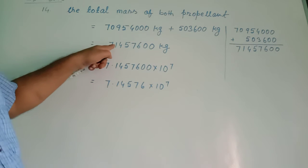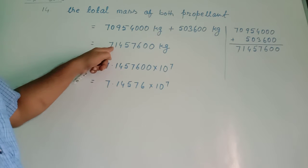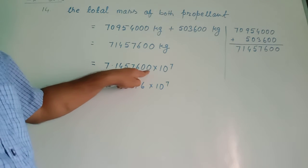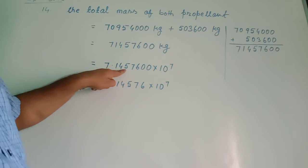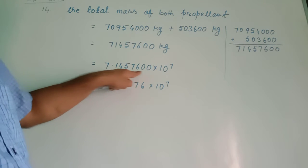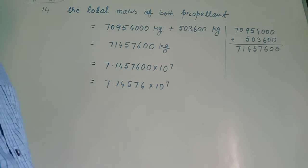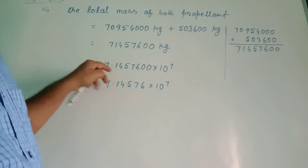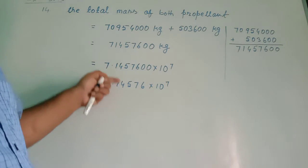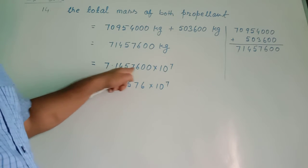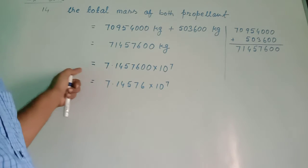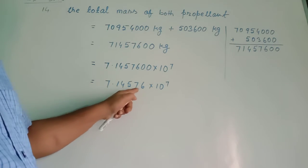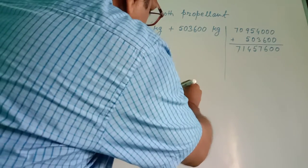Now, as per rule, we have to keep the decimal just after the first digit, that is just before the remaining digits. I placed it accordingly and the number becomes 7.1457600. The number of digits after the decimal position is 7 — counting 1, 2, 3, 4, 5, 6, 7. Since I used 7 digits, I wrote 10 to the power 7. The zeros before the decimal have no value, so I cancelled them. The answer is 7.14576 × 10^7 kg.